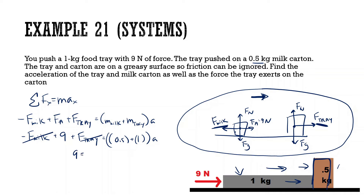Now we have 9 equals 1.5 times A, and we can solve: 9 divided by 1.5. The key is being able to draw the free body diagram correctly — a lot of people have difficulty with that.